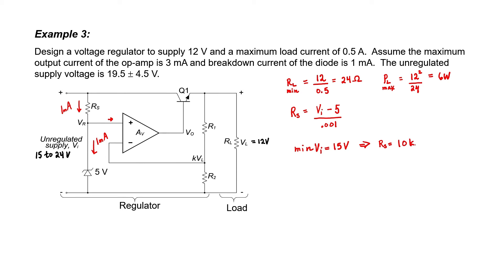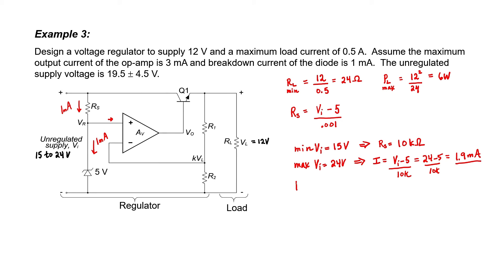If we substitute 15 volts for V sub i in our equation for R sub S, we find that R sub S should be 10 kilo ohms. That means when the input voltage is 15 volts, exactly 1 milliamp flows through the resistor and through the Zener diode. When the input voltage is at its maximum, 1.9 milliamps would flow through the Zener diode — no problem. The idea is to design R sub S to supply the necessary current to get the Zener diode to break down. The Zener diode has 5 volts across it and with 1.9 milliamps flowing, it dissipates 9.5 milliwatts. R sub S will have at most 1.9 milliamps through it at 10 kilo ohms, so it needs to dissipate at maximum 36.1 milliwatts.